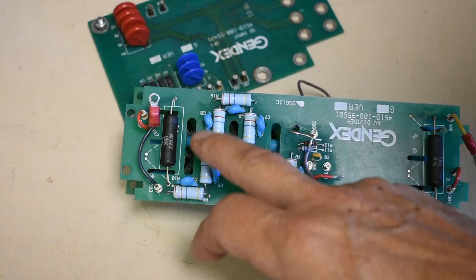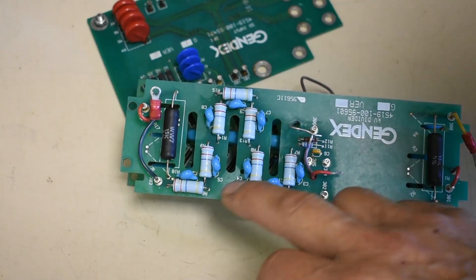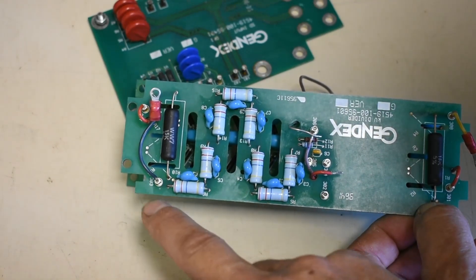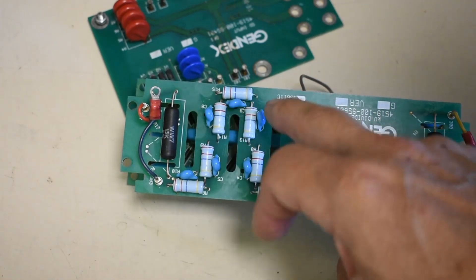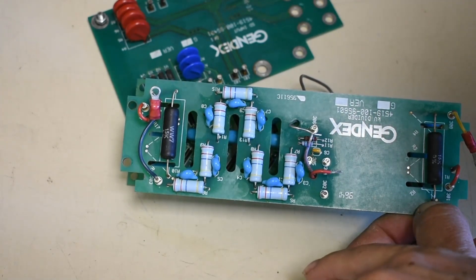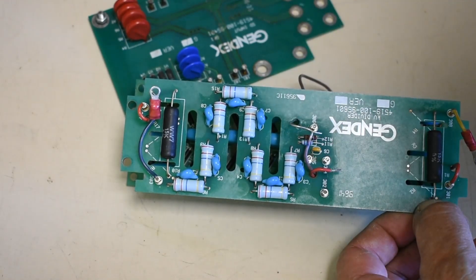One other point, this is the high voltage potential divider for the high voltage pin here. So you notice the gaps for basically for insulation and so on. But it's all discrete components.